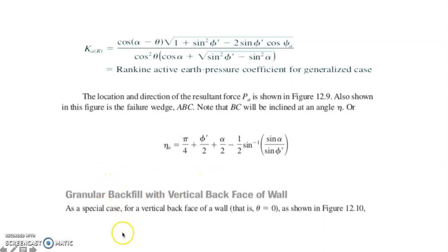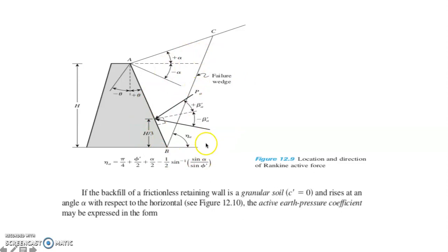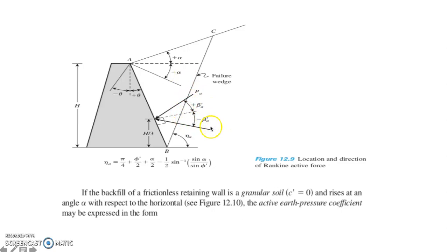Now let's move on to the special case for granular backfill with a vertical back face of the wall, where theta equals zero. The illustration shows the location and direction of the Rankine Active Force P sub A, which is inclined at an angle beta sub A and acts at a distance H/3 from the bottom of the retaining wall.